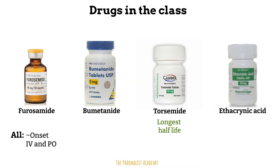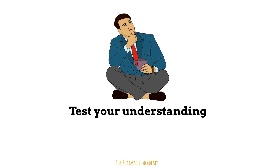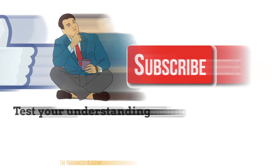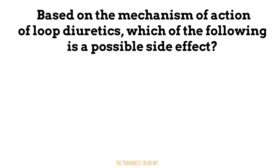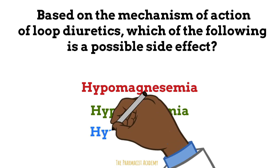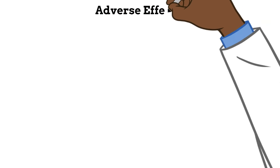Okay, so before we move on, let's test your understanding. If you're enjoying the video so far, make sure to hit the like button and subscribe for more videos like these. Based on the mechanism of action of loop diuretics, which of the following is a possible side effect: hypomagnesemia, hypercalcemia, or hypochloremia? Pause the video if needed and put your answers in the comments. We will discuss the answer next when we review the adverse effects of these agents.